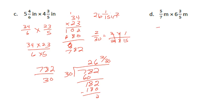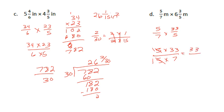For problem D, we have 5 sevenths times 6 and 3 fifths. 6 times 5 is 30, plus 3 is 33 fifths. Rewriting: 5 times 33 over 5 times 7. The fives cancel — 5 goes into 5 one time — leaving 33 sevenths. 7 goes into 33 four times with remainder 5. So this equals 4 and 5 sevenths meters squared.